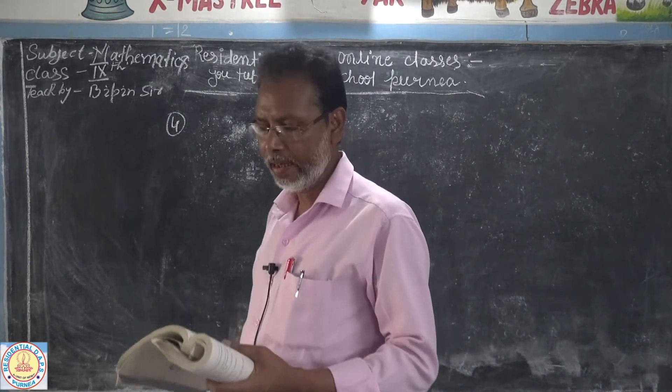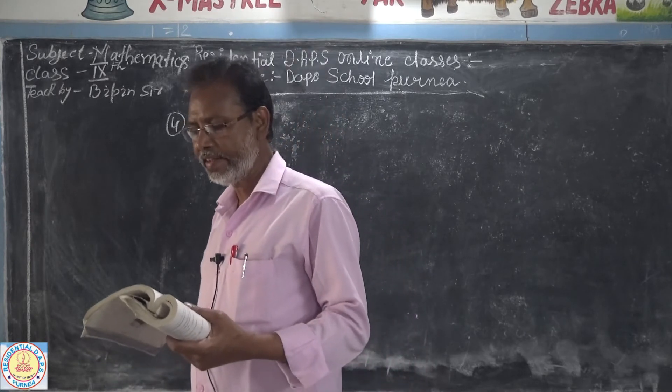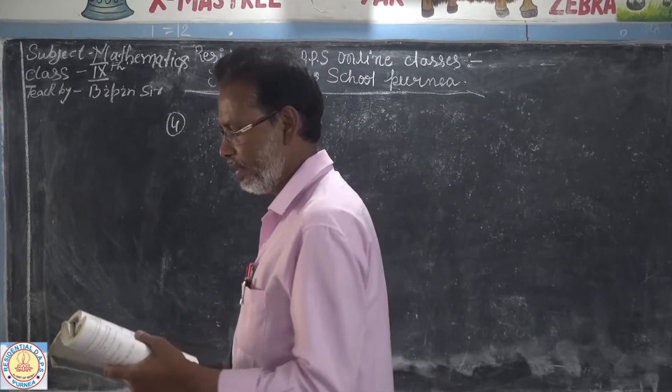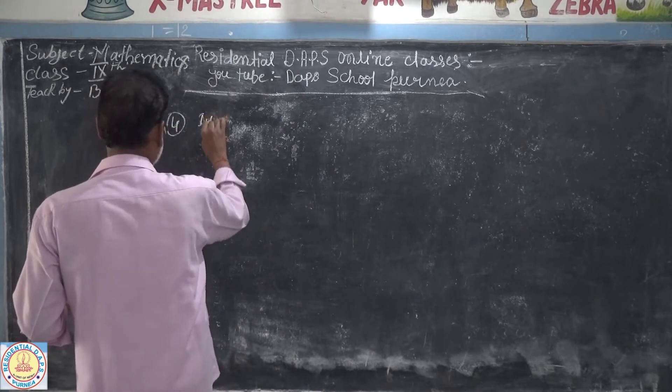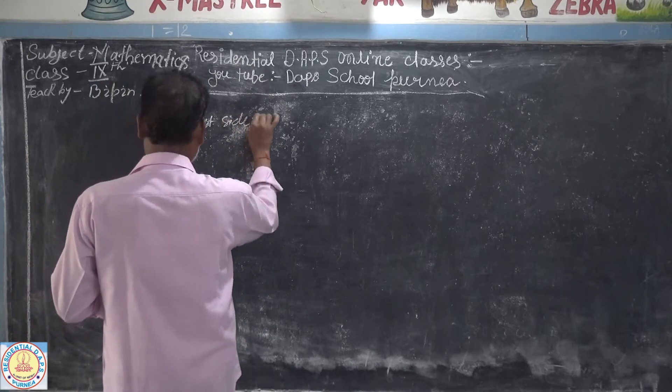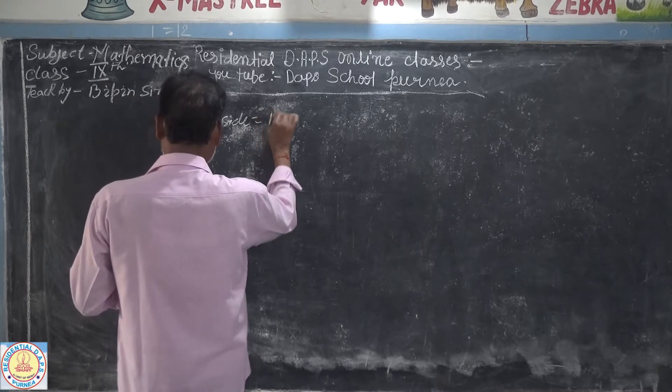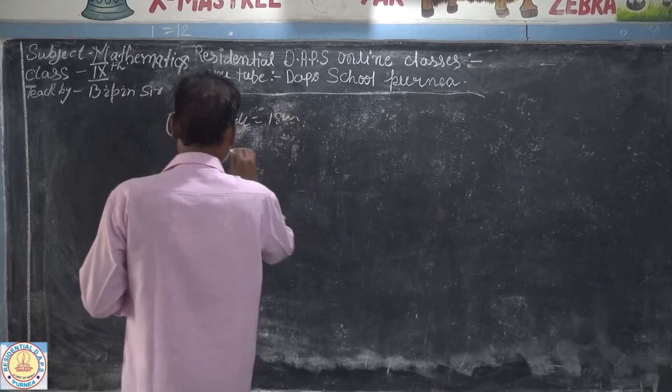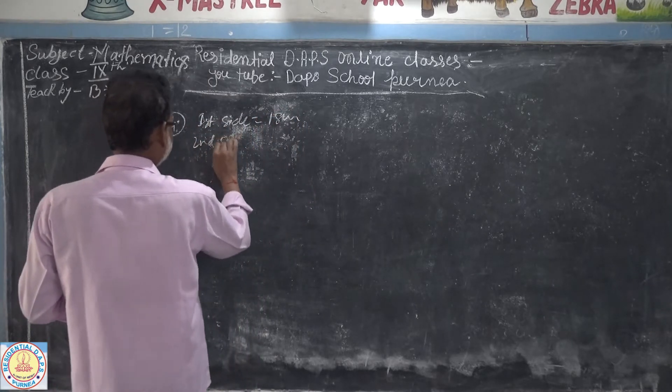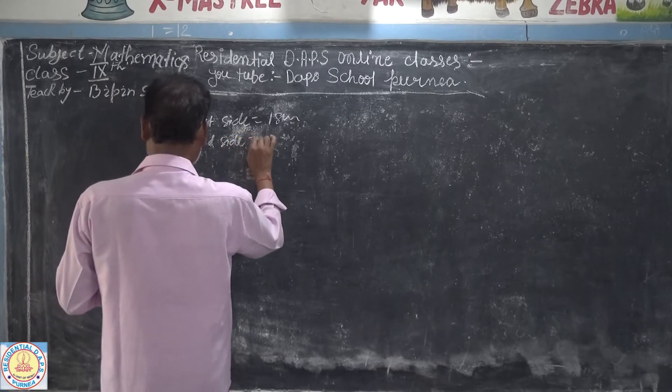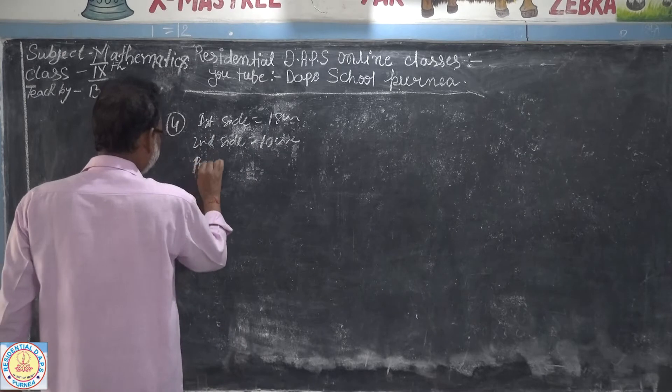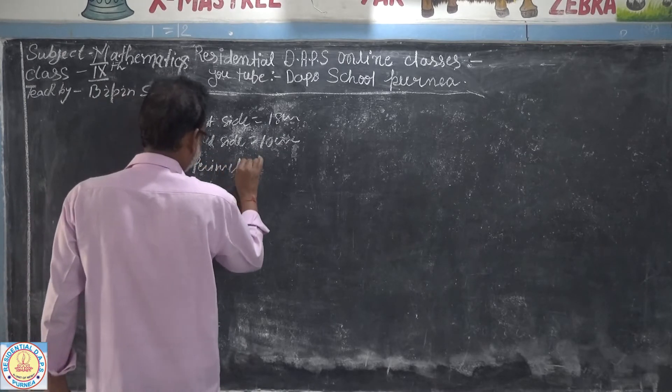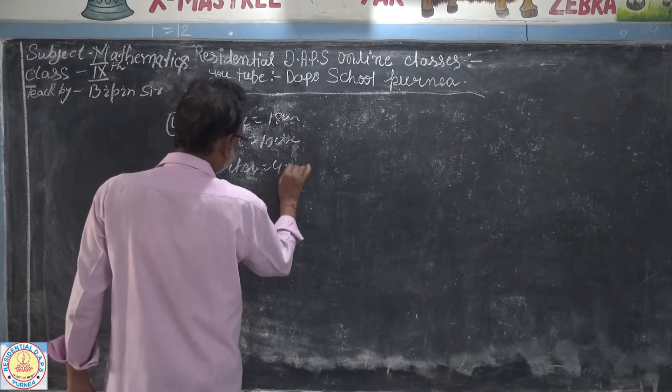Question number four: Find the area of a triangle. Two sides are 18 cm and 10 cm, and perimeter is 42 cm. First side is given 18 cm, second side 10 cm, perimeter 42 cm.